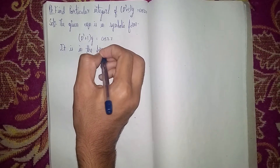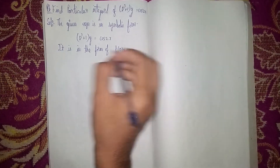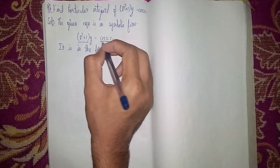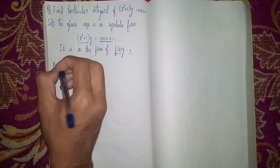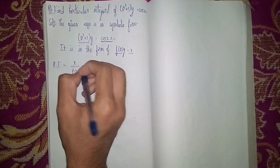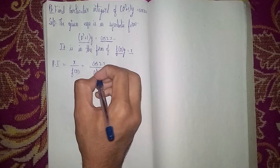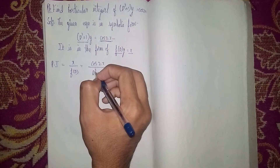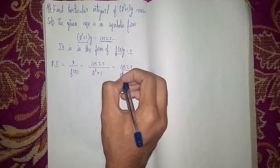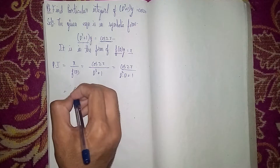This is in the form of f(D)y = X, where f(D) is (D² + 1) and X is cos(2x). The particular integral formula is PI = X / f(D). Now substituting, PI = cos(2x) / (D² + 1). Since we have a D² term, we substitute accordingly.